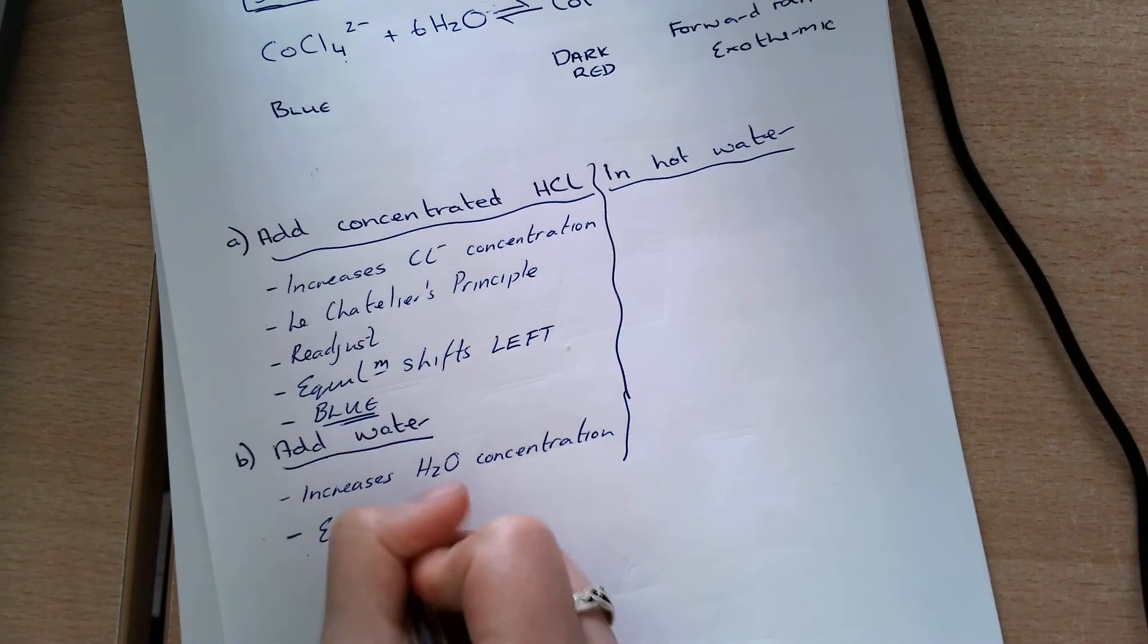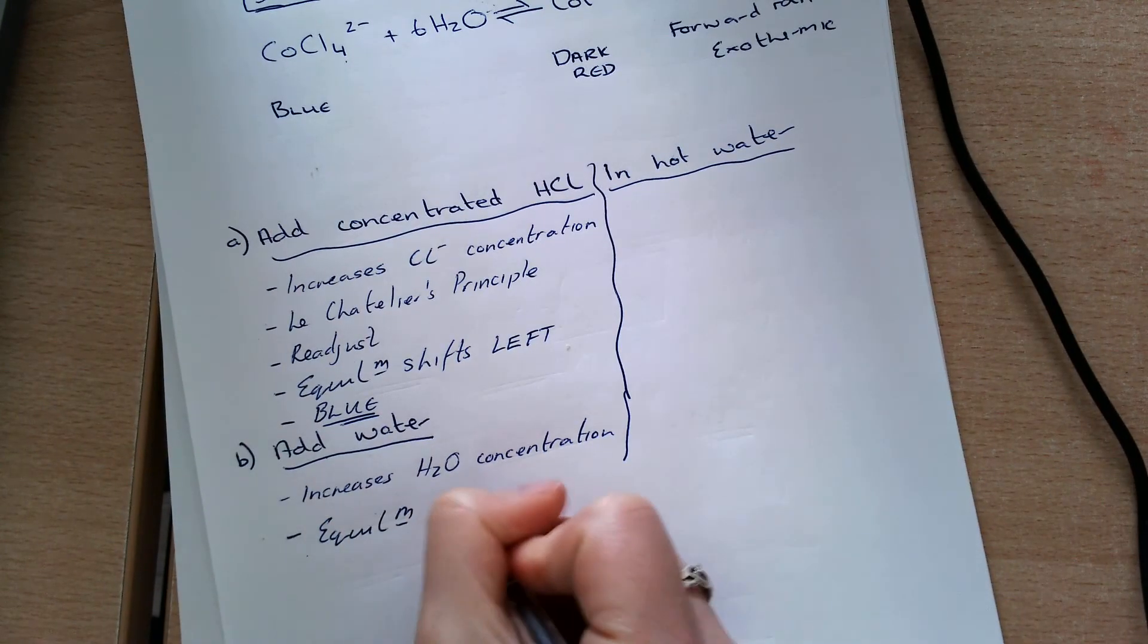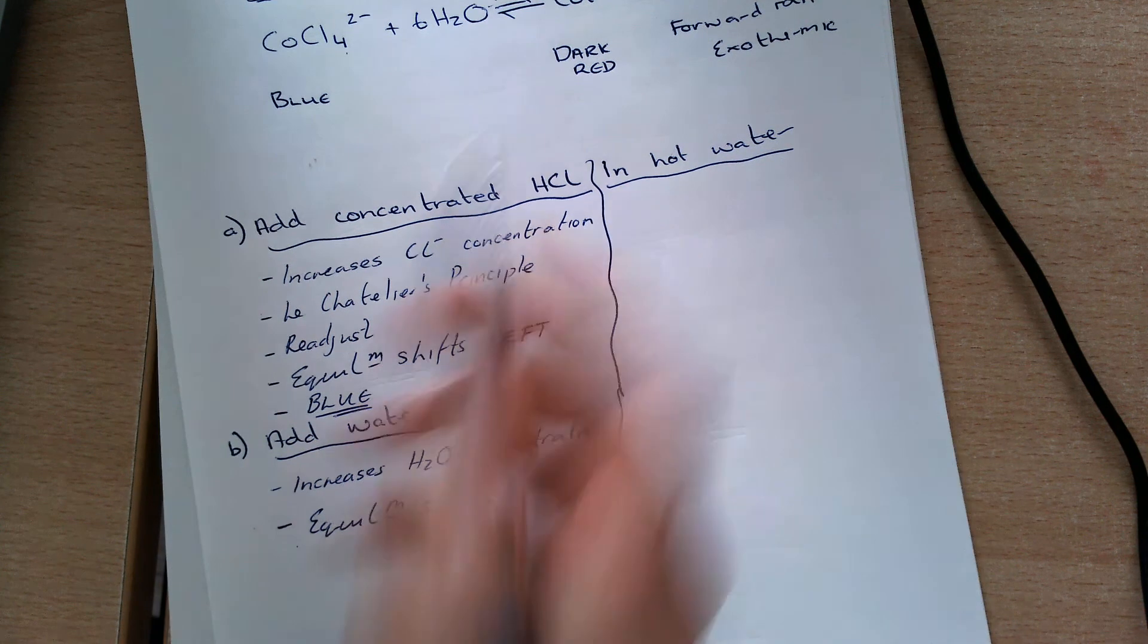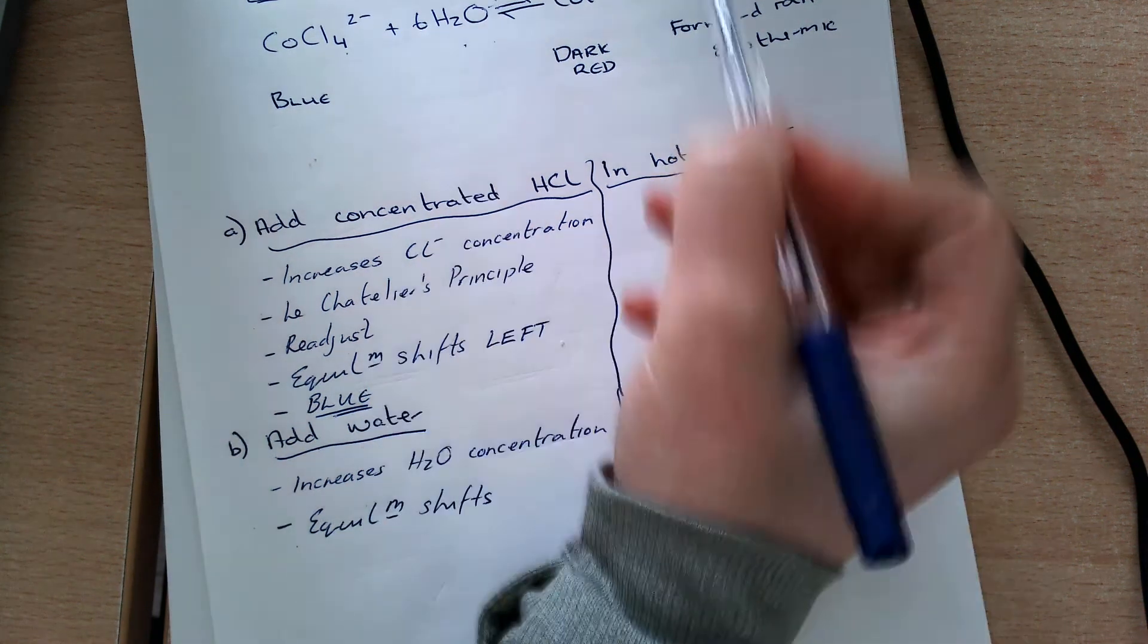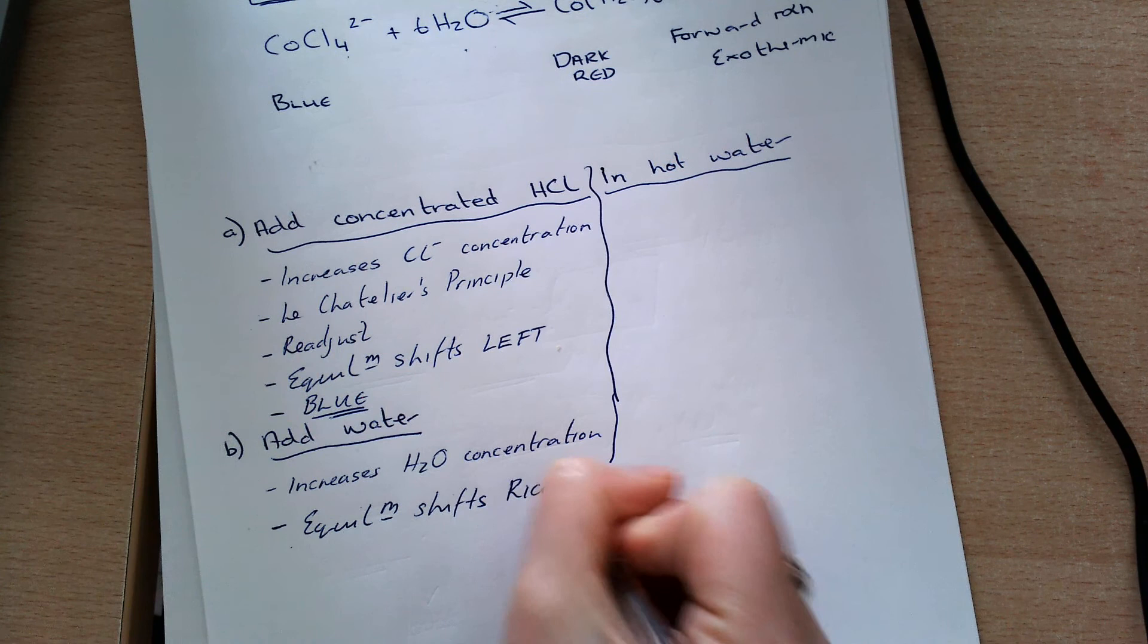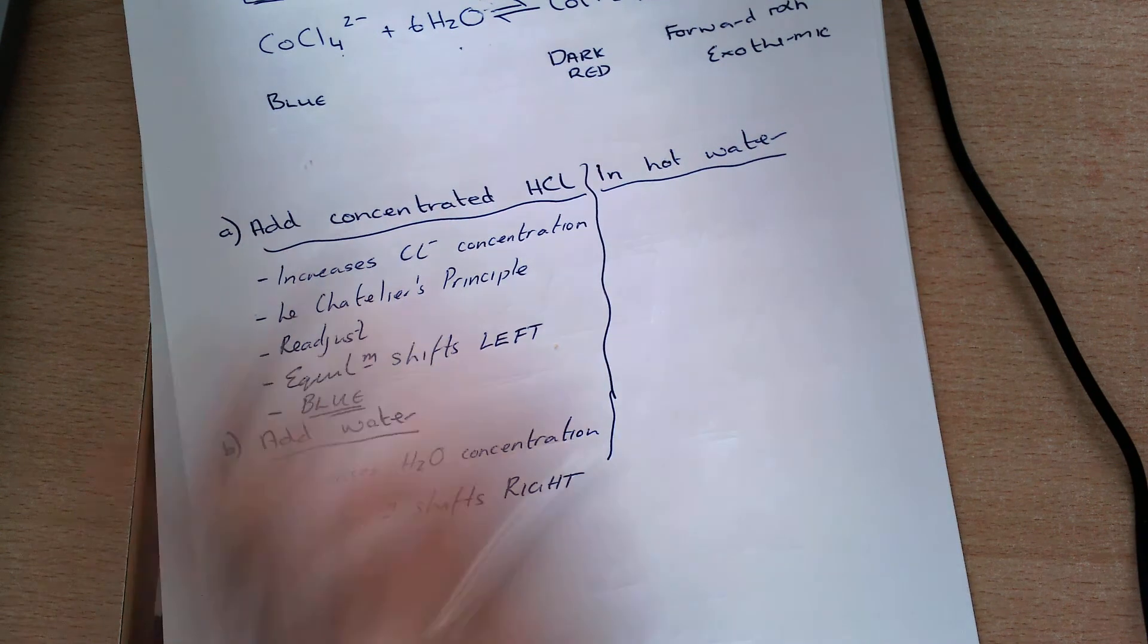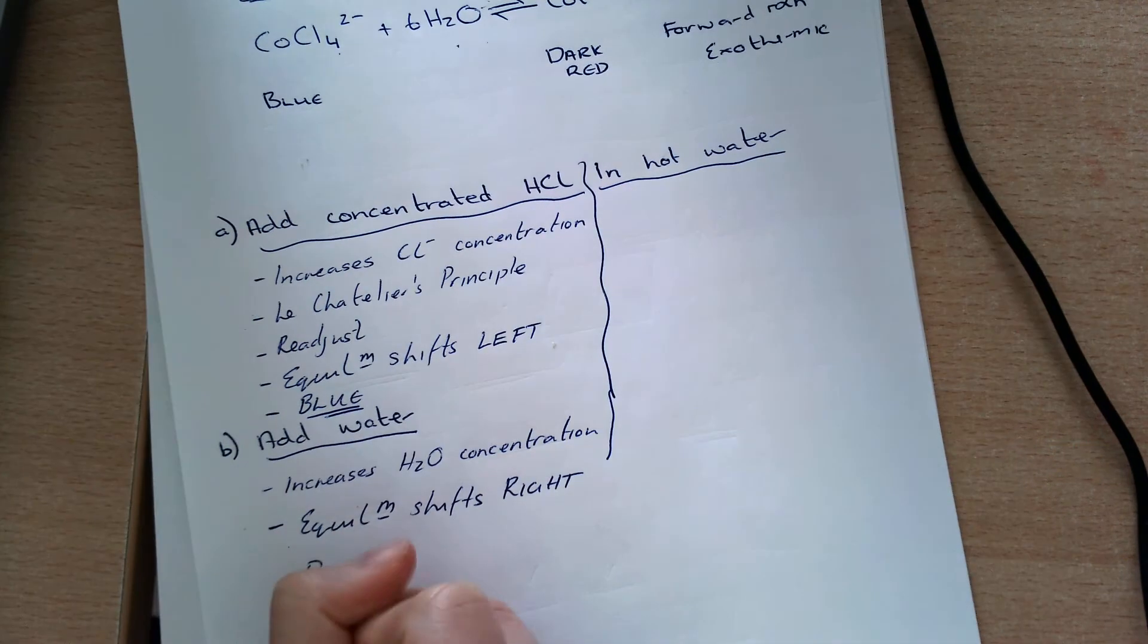So here I'm increasing the concentration of my water on my left-hand side, so I'm shifting to the opposite side. So equilibrium is going to shift right, and that gives a dark red color.